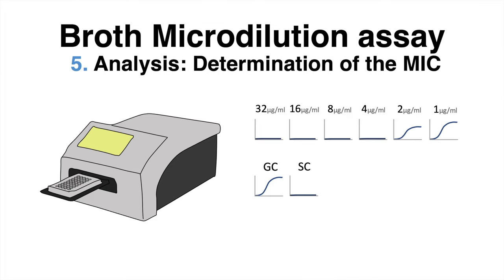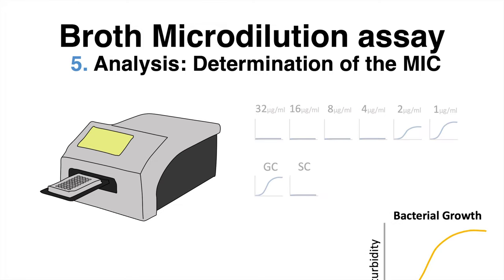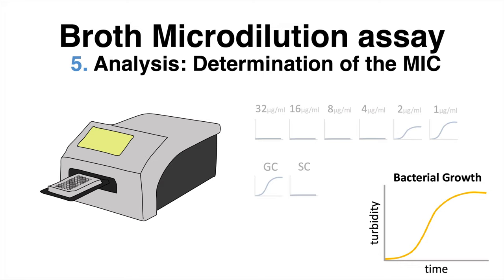Before the results can be analyzed, a brief introduction of the typical bacterial growth curve is necessary. Since the bacteria will grow over time, the turbidity increases as well. Under normal conditions, the curve can be separated into different phases, starting with the lag phase, continuing with the exponential growth also known as the log phase. After that, depletion of essential nutrients is one factor to limit bacterial growth in the stationary phase, which later even results in dying cells.